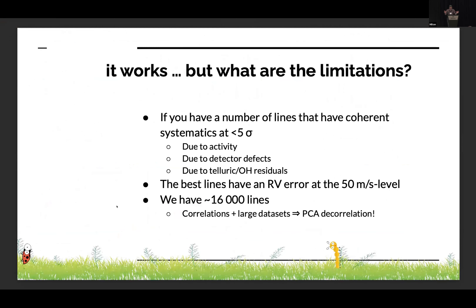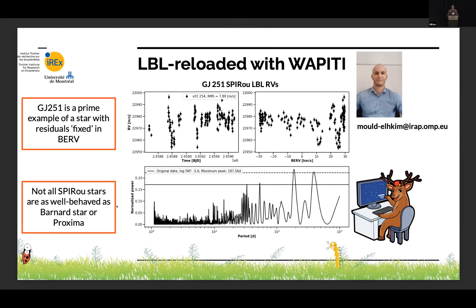But it's not perfect. What happens when you have correlation between lines due to anything correlated with your spectrum — telluric residuals, detector defects, and so forth? With 16,000 lines and correlated things, lots of data points should ring the bell of PCA. A grad student in Toulouse looked at this, examining one of the worse offenders in the SPIRou survey: GJ 251, which has really strong RV residuals. He did a weighted principal component analysis and decorrelation of the data.